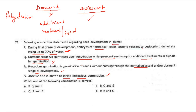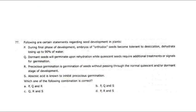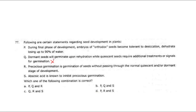So Q is the wrong one; P, R, and S are correct. Wherever Q is present it becomes wrong; the rest three are correct. This completes the discussion of water stress questions. If you have further questions, you can post them and ask. Thank you.